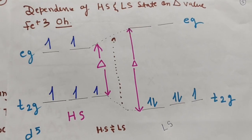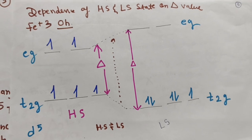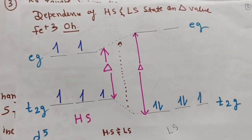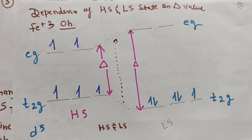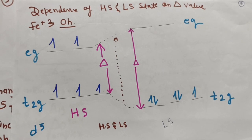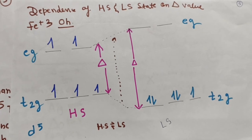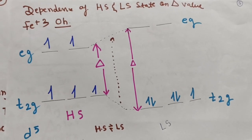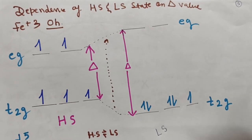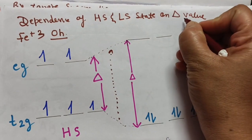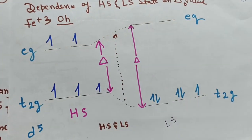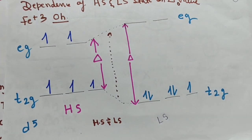The spin state depends on delta, the crystal field splitting energy. For octahedral complexes, this is represented as delta-o. Let us take the example of iron complexes to understand this.